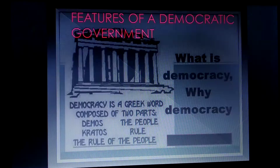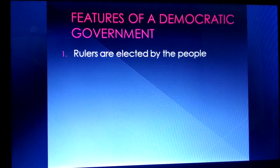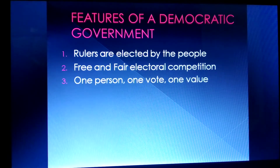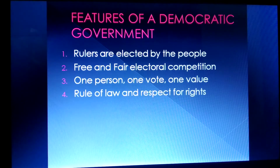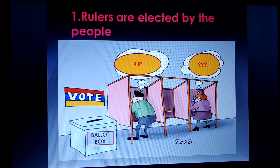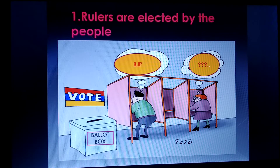Now we will study the features of a democratic government. First: rulers are elected by the people. Second: free and fair electoral competition. Third: one person, one vote, one value. Fourth: rule of law and respect for rights. In a democratic government, elections are held after every five years and the rulers are elected by the people.